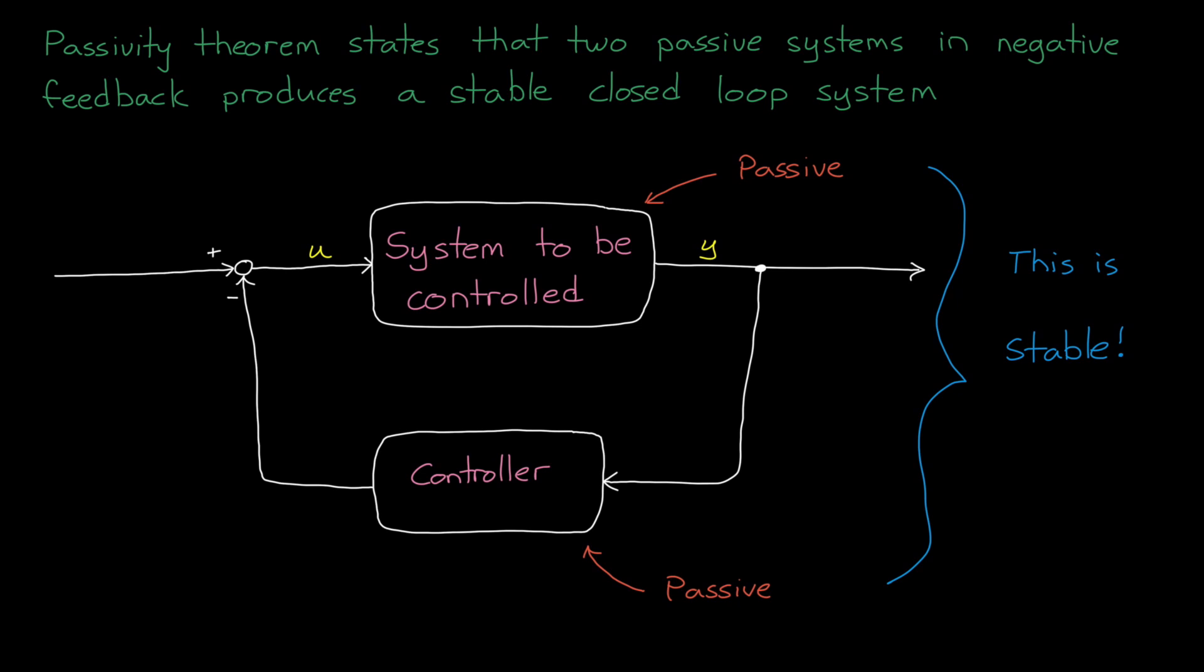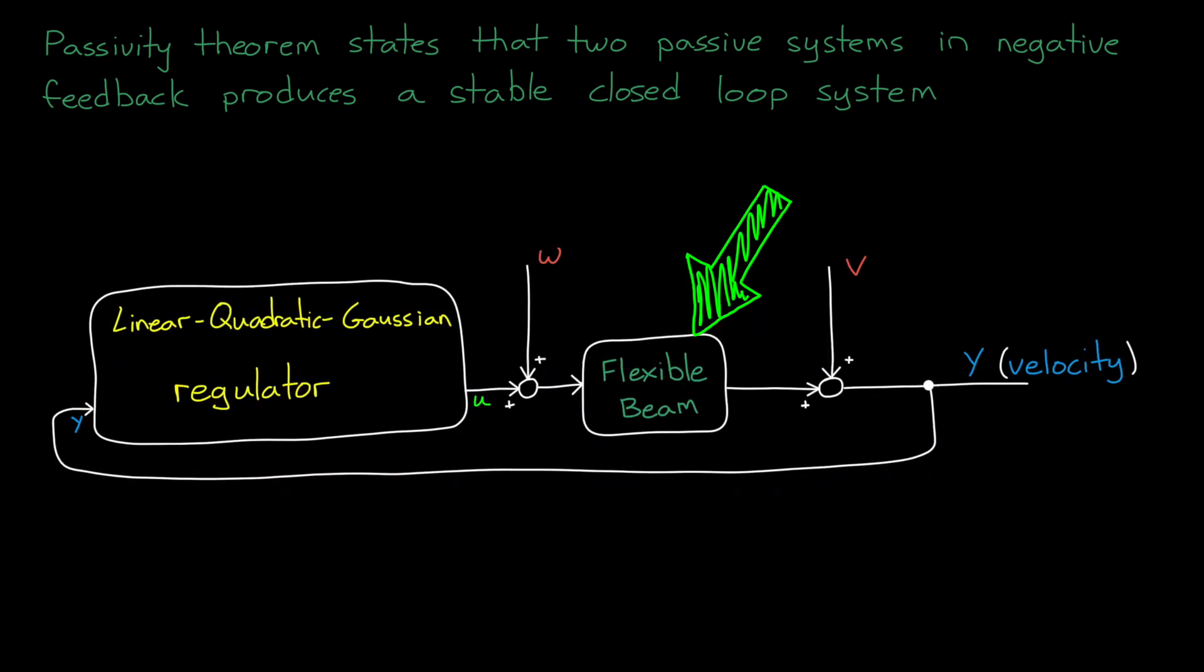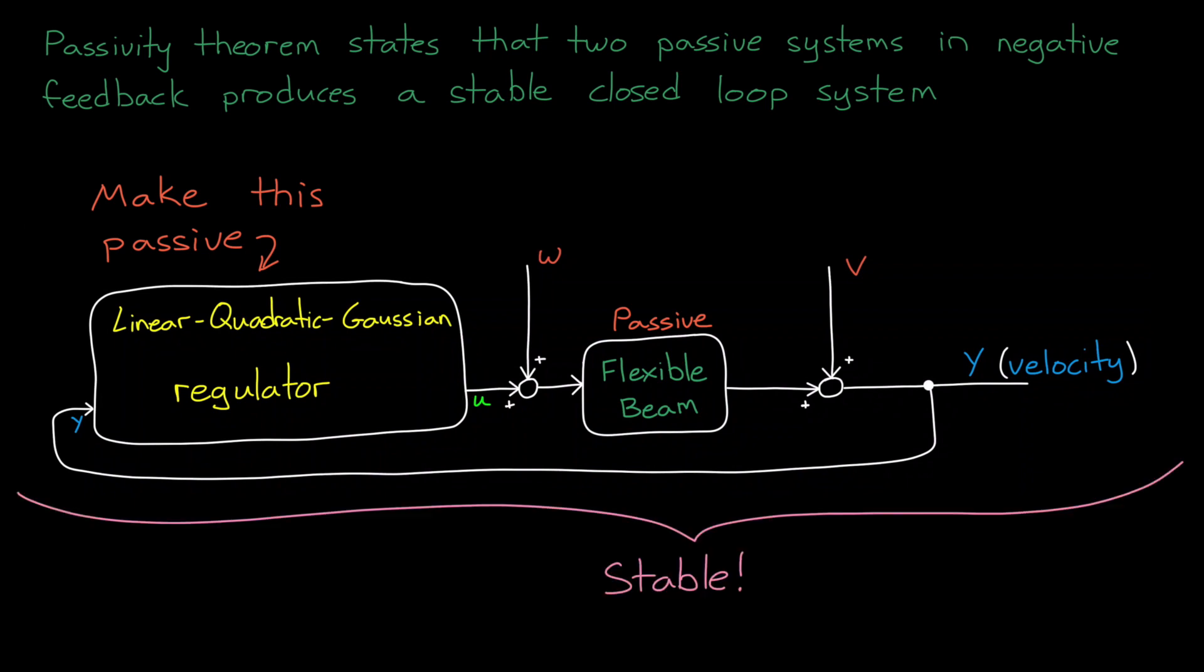Therefore, if the system you're trying to control is passive, then you can design a passive feedback controller and you are guaranteed to have a stable system, even in the presence of unmodeled dynamics, as long as those dynamics don't impact the passivity of the system. The reason this theorem is so important is because there are classes of physical systems that are known to be passive. For example, a lot of analog electronic systems that are made out of passive components like resistors and capacitors are passive systems.